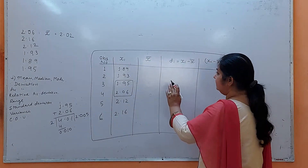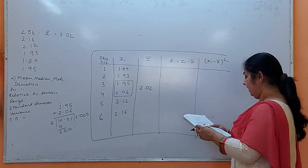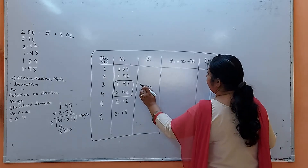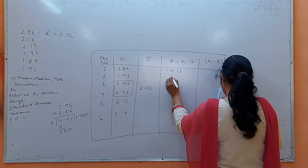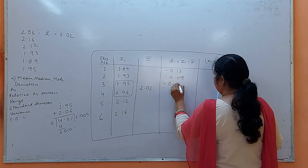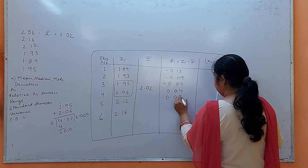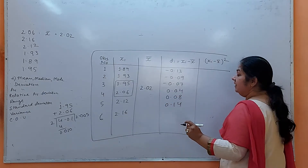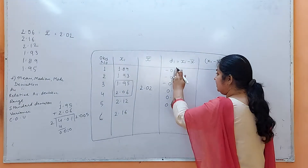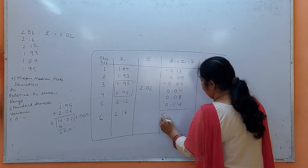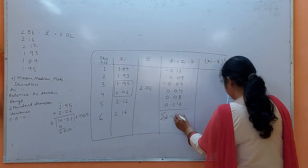Now x-bar is 2.02. We have to find the deviations. For each value, compute xi minus x-bar: the deviations are minus 0.13, minus 0.09, minus 0.07, then 0.04, 0.08, and 0.14. Please note: you don't have to consider the signs — just sum them up. The summation of di comes out to be 0.55.